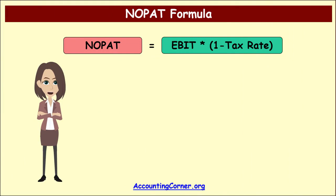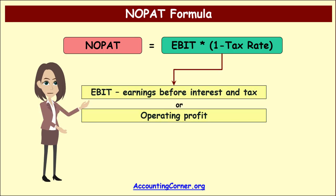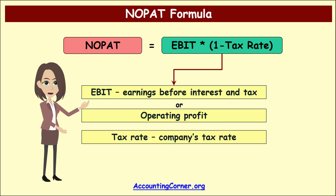Let's explore the NOPAT formula. NOPAT is a result of EBIT multiplied by 1 minus the tax rate. EBIT is earnings before interest and tax, or operating profit. You can find this item on the income statement of the company. The tax rate is the actual percentage of the tax rate applicable for the company. The result of this formula is net operating profit decreased by tax expenses.